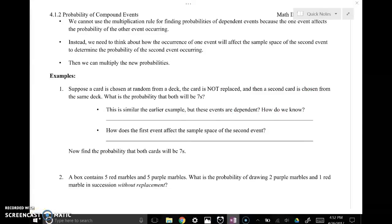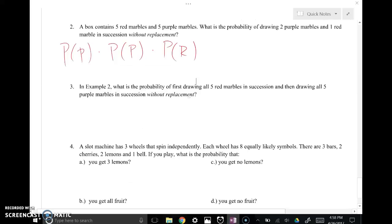All right, we're talking about dependent events and probabilities with those. So one of the things to point out is that we can't necessarily use the same multiplication rule with dependent events because the events are affecting each other's outcomes, therefore the probabilities change. Let's try example two here. We want to pull three marbles out of this bag, five of which are red, five of which are purple. We want to go purple, purple, red consecutively.